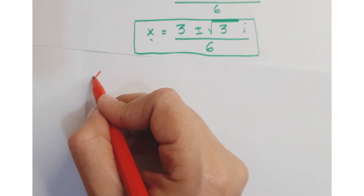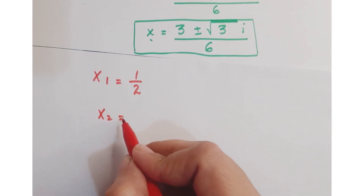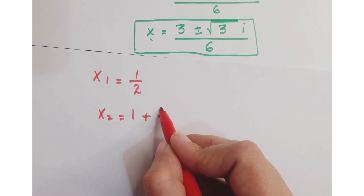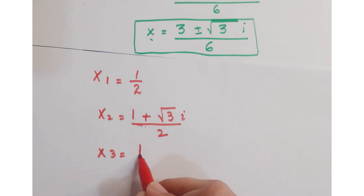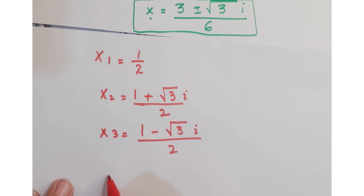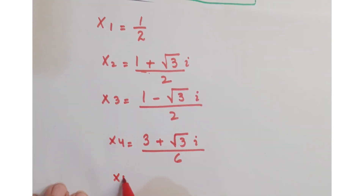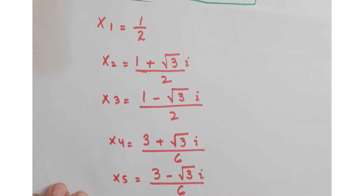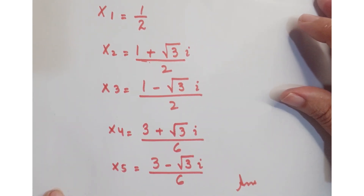So the solutions of x are: x equals 1 upon 2; the second solution is x equals 1 plus root 3i upon 2; the third solution is x equals 1 minus root 3i upon 2; the fourth solution is x equals 3 plus root 3i upon 6; and the fifth solution is x equals 3 minus root 3i upon 6. These are the solutions of x — I hope you understand it, and if you like it, kindly subscribe to my channel.